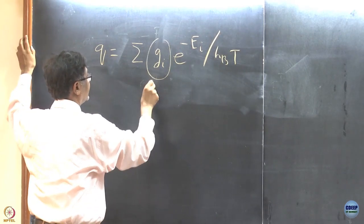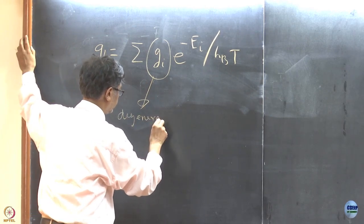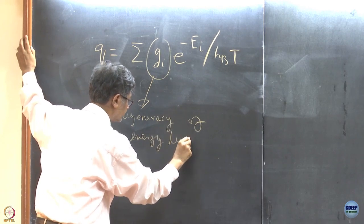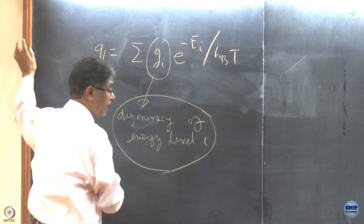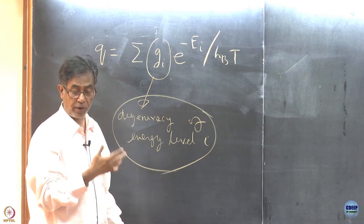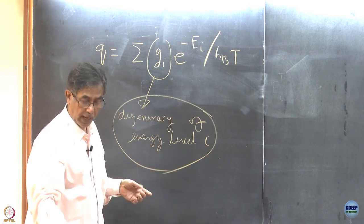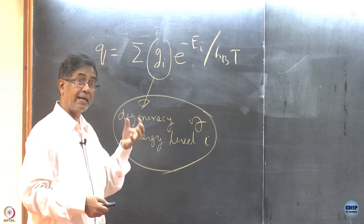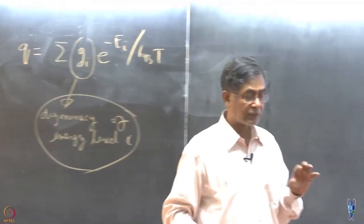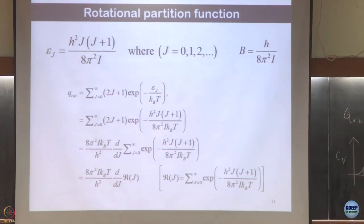This factor is a degeneracy factor — the degeneracy of an energy level. G is universally used as a density of states, just as in the radial distribution function. So G is almost a universal symbol for density of states, and here the density of states is 2J+1.